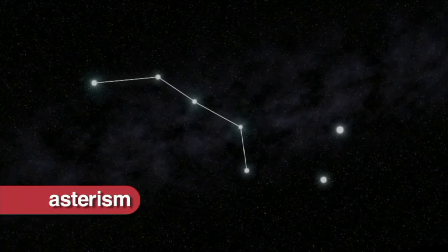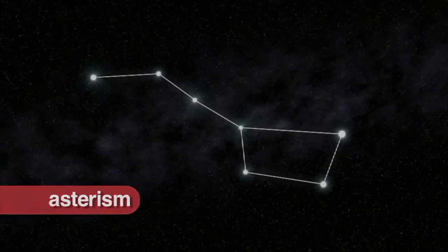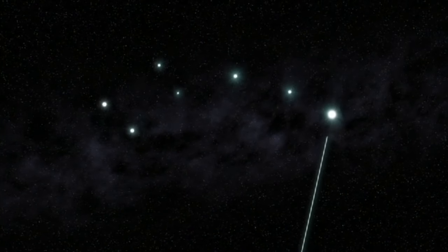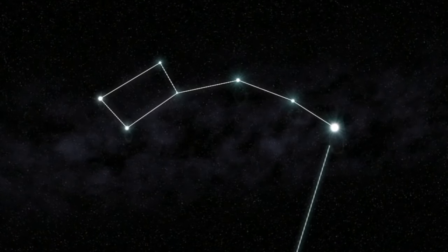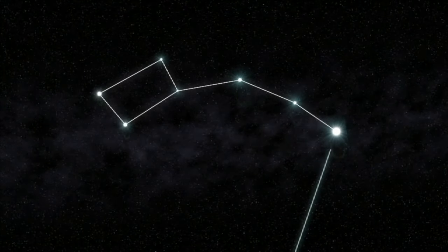The Big and Little Dipper are actually asterisms. An asterism is a prominent pattern, or group of stars, that forms parts of other constellations, and is not an official constellation itself.